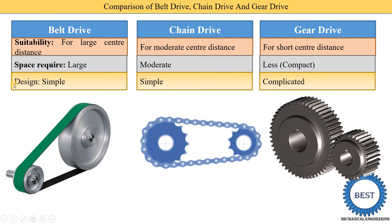The fourth point is related to design. The design of the belt drive is very simple. For a chain drive, the design is also simple. But for a gear drive, the design is complicated.